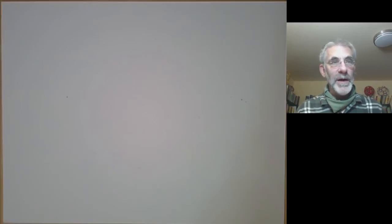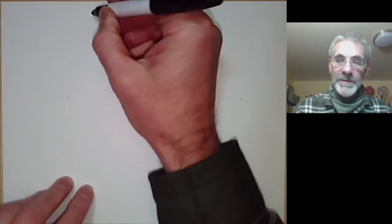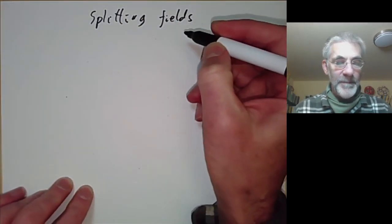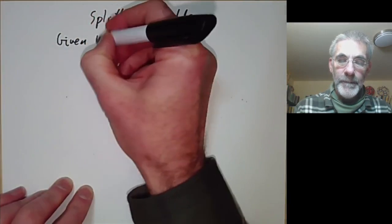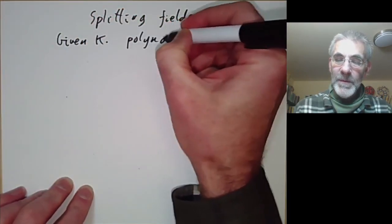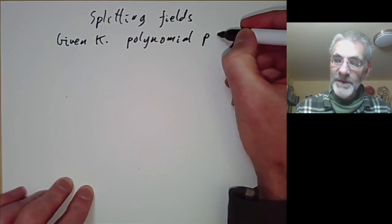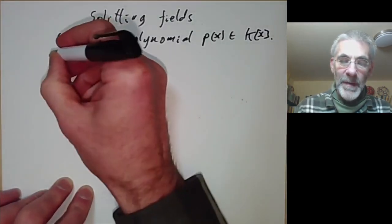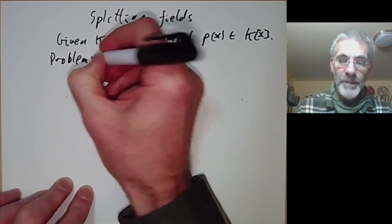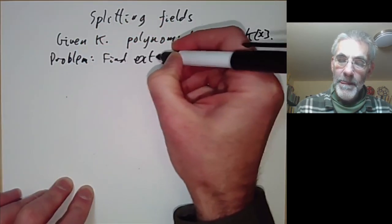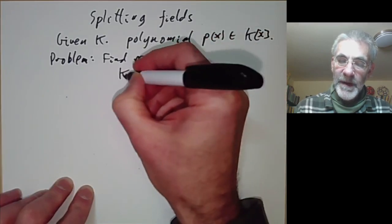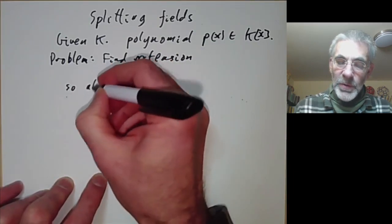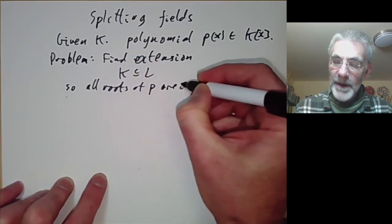This lecture is part of an online course on Galois theory and will be about splitting fields. Suppose we have a field k and a polynomial with coefficients in k — a polynomial p of x in the ring k[x]. The problem we want to solve is: find an extension of k, an extension field L, so that all roots of p are in L.